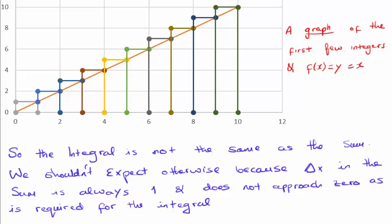In front of you I've plotted a graph of the first few integers, and I've also plotted f of x equals y equals x. So we see the straight line f of x equals x here, and I've plotted all of the areas of the first few integers.